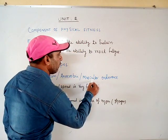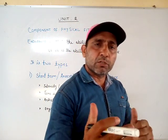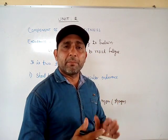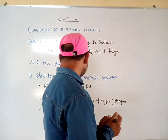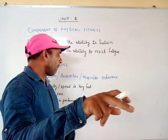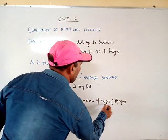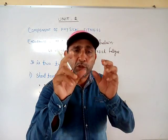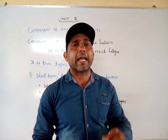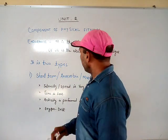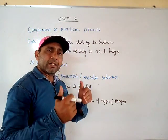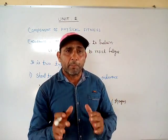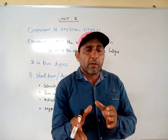It is also known as muscular endurance because in this kind of endurance the usage of the muscles is more. The activity is performed in the absence of oxygen — the activity is performed with the help of stored energy in the muscles, namely glycogen. In anaerobic activities, the time is less and the intensity and speed are very high, so the body cannot cope up with that speed through normal oxygen delivery.